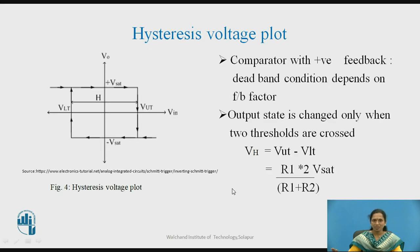The hysteresis voltage plot can be plotted as follows. A comparator with positive feedback produces the dead band condition. This dead band depends on the feedback factor, which is R1 divided by (R1 + R2).